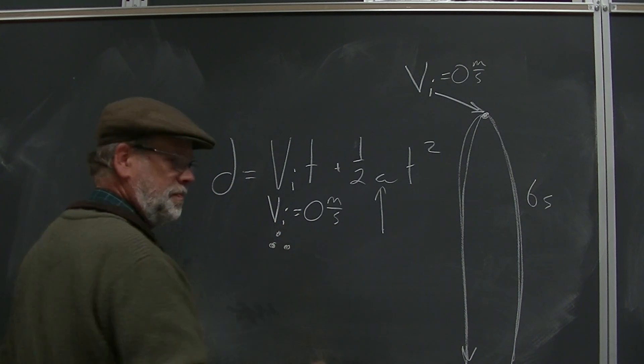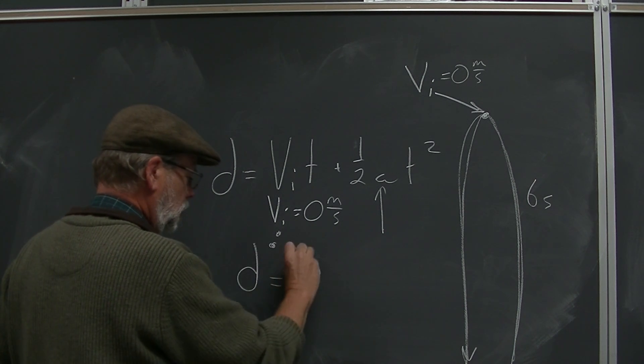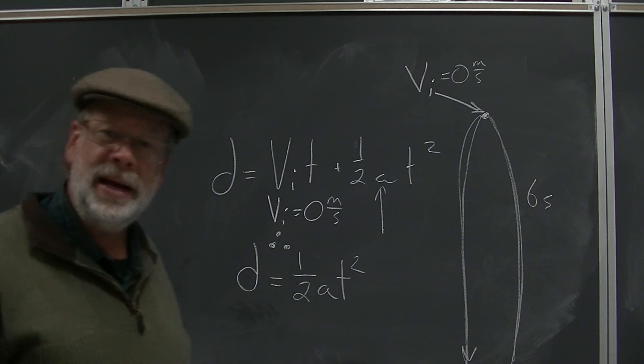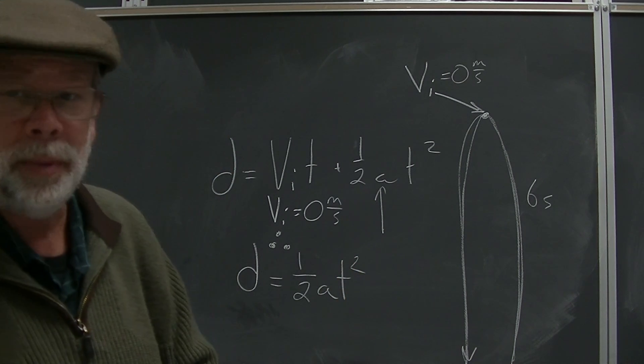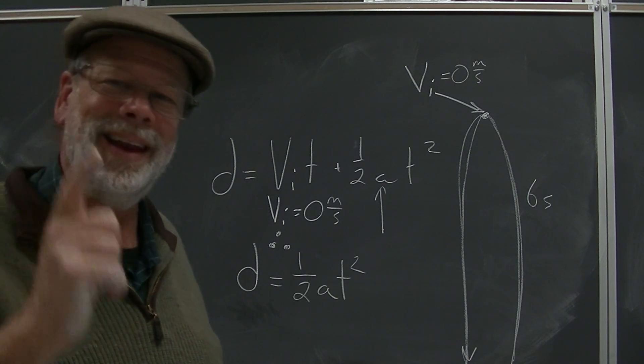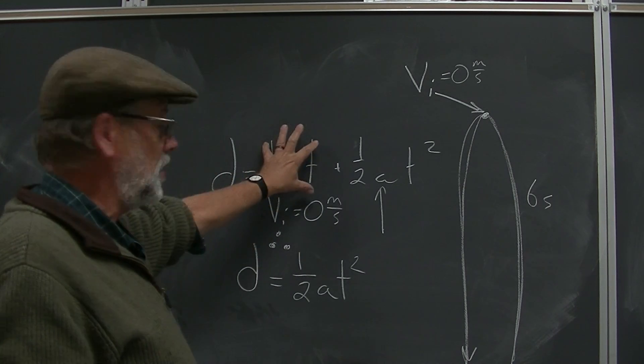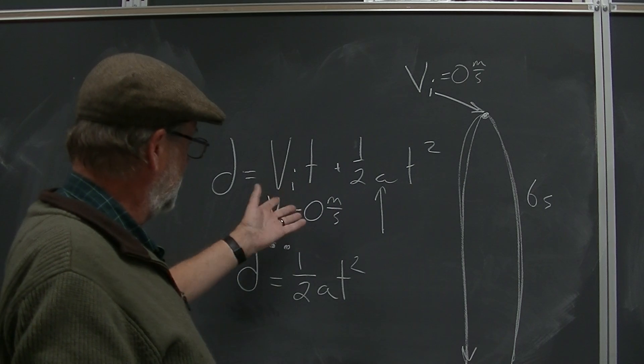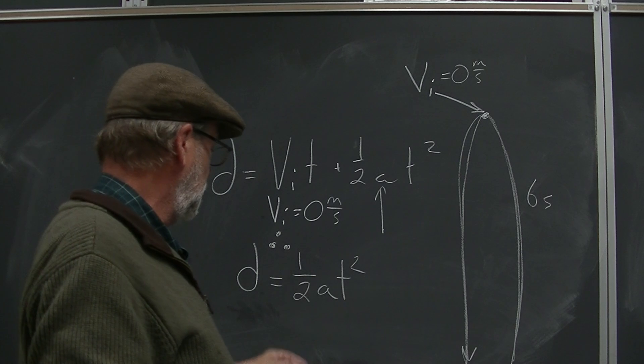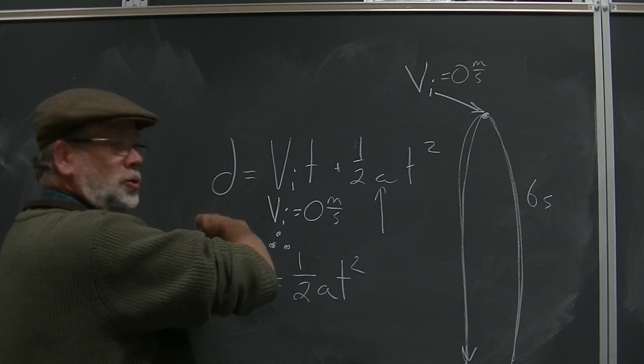The way we do that, we say VI equals zero meters per second. Please don't leave out units there. And then we make three dots in this arrangement that stands for therefore D equals one half AT squared. It is nice and easy. There's no problem with that. Just remember, D does not equal one half AT squared. That is a lie. The only time you can say that is if you've shown clearly that the first term drops out because the initial velocity is zero meters per second. Now you could talk about the distance it's fallen as one half AT squared.